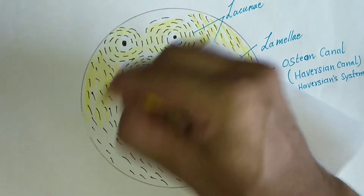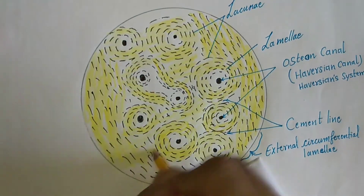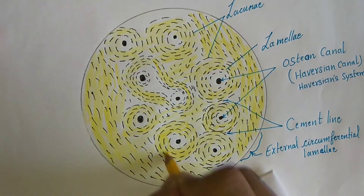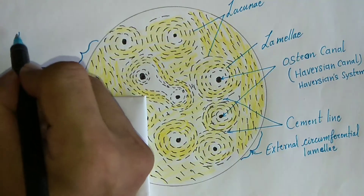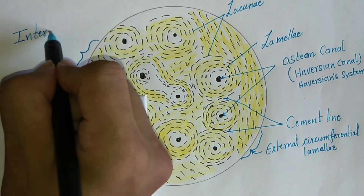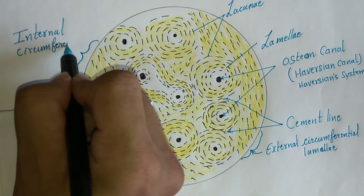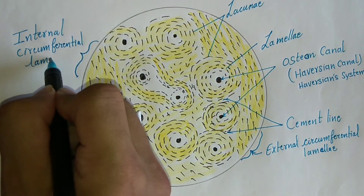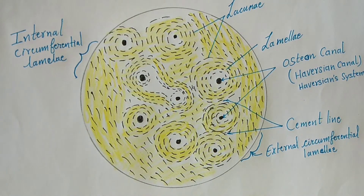The internal wall of the bone is lined by internal circumferential lamellae. The external circumferential lamellae line the endosteum along the bone marrow. The osteones are present in between the internal and external circumferential lamellae.